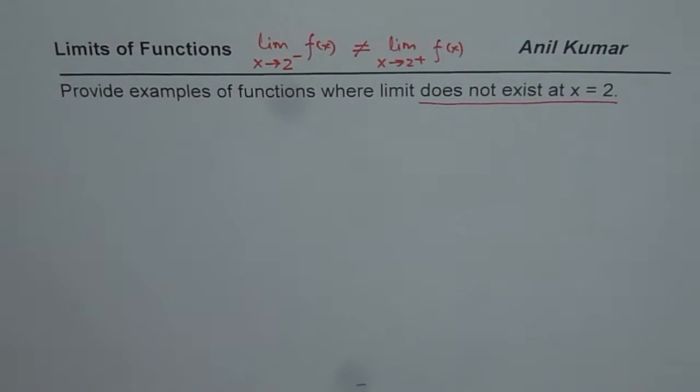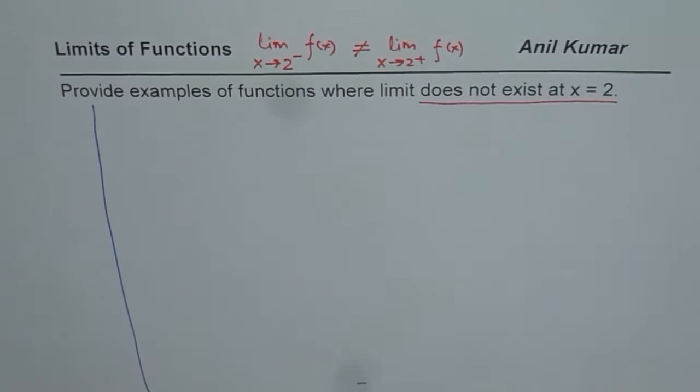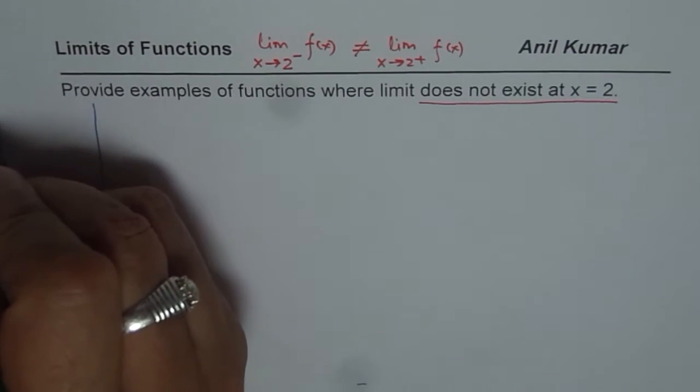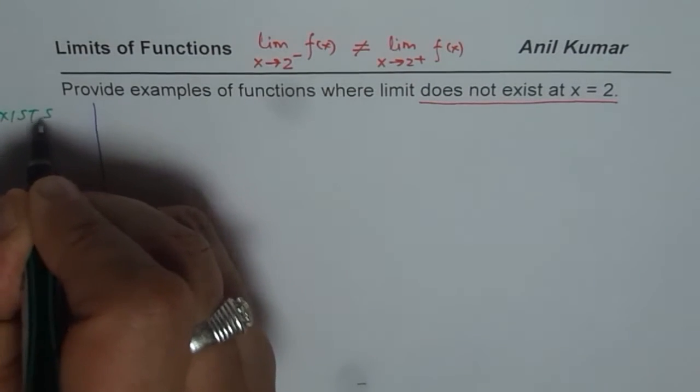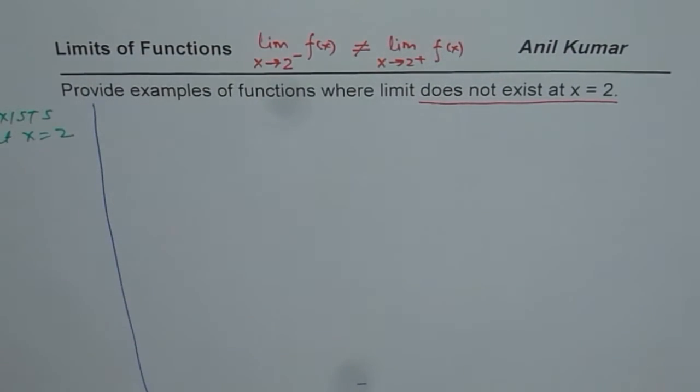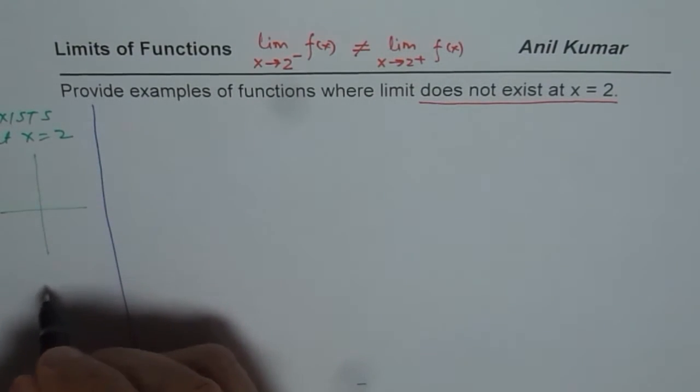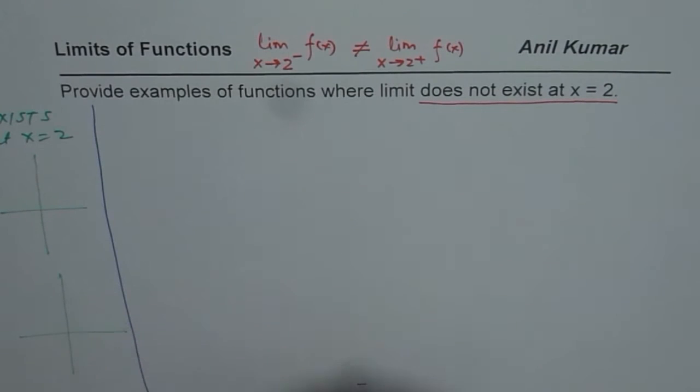Now there could be examples where it exists. So let me draw a line here in green color for exists at 2. Examples where it exists could be a continuous function or a function which has a hole. Let me sketch those quickly for you.